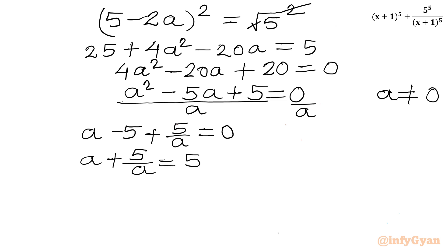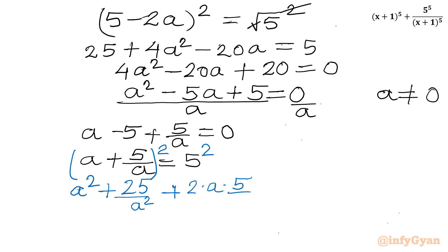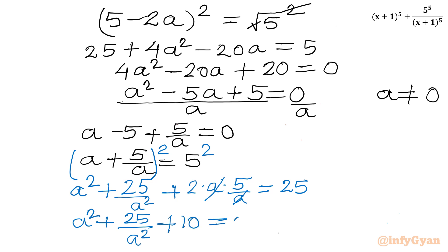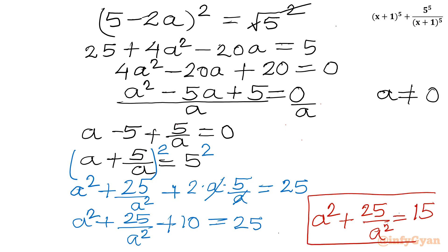Now I will square both sides of a + 5/a = 5. Using (a+b)² formula: a² + 25/a² + 2·a·(5/a) = 25. The 2·a·(5/a) simplifies to 10, so a² + 25/a² + 10 = 25. Therefore a² + 25/a² = 15. Let us call this Equation 1.